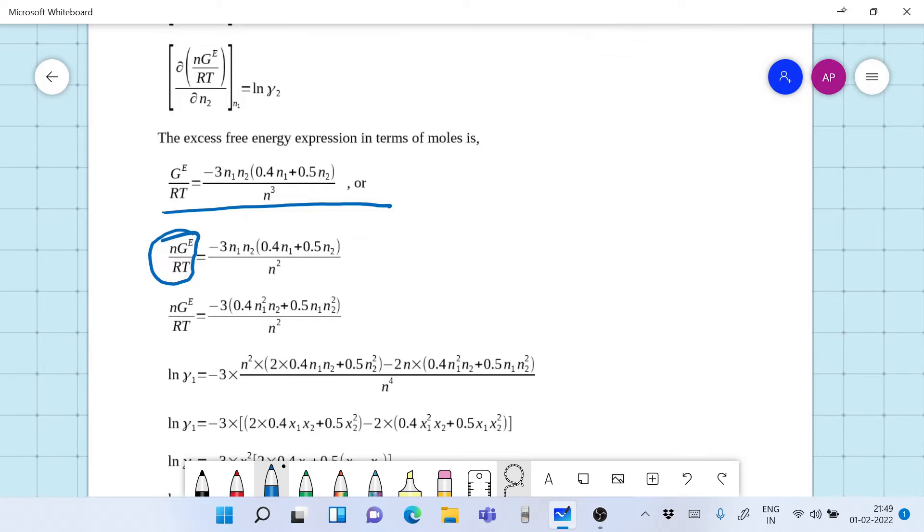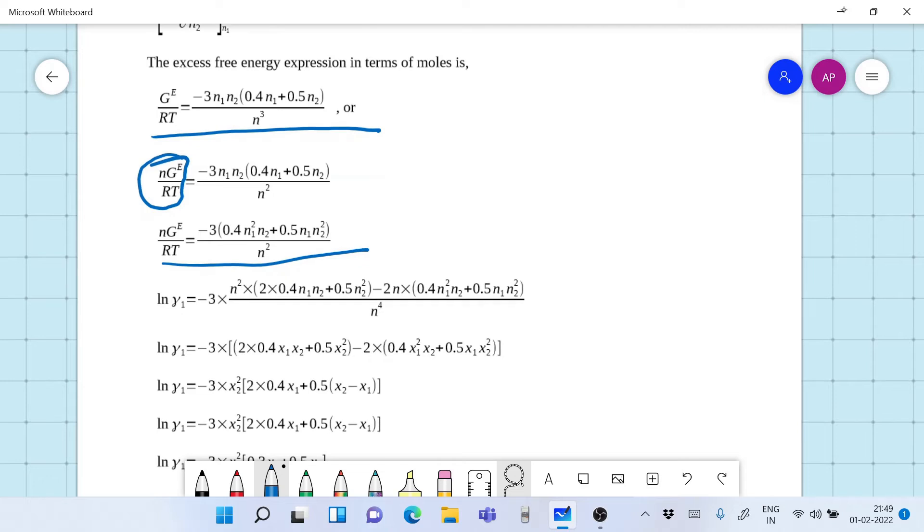After that once you have got this expression now differentiate this expression with respect to n1. Now if you differentiate this equation with respect to n1 holding n2 constant you automatically again get ln gamma 1.